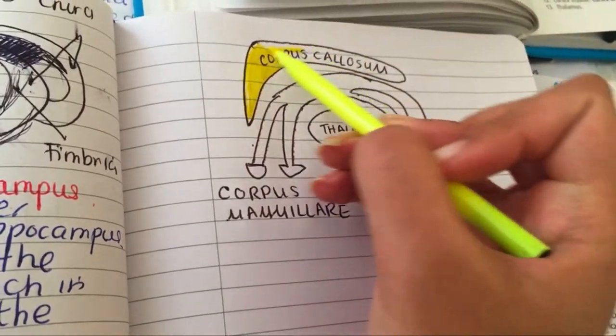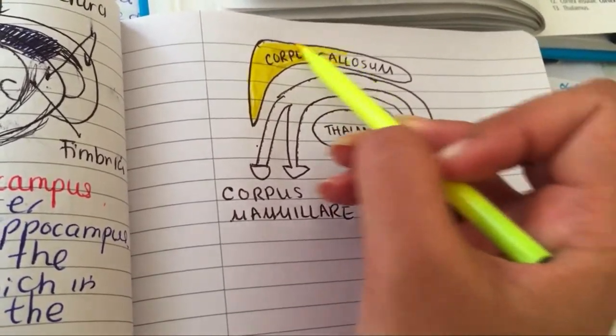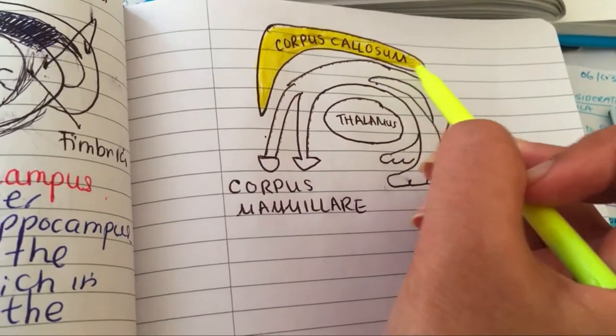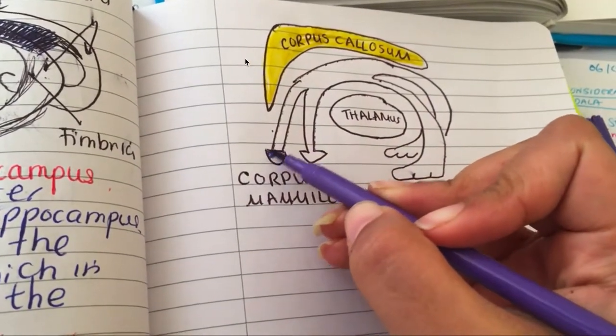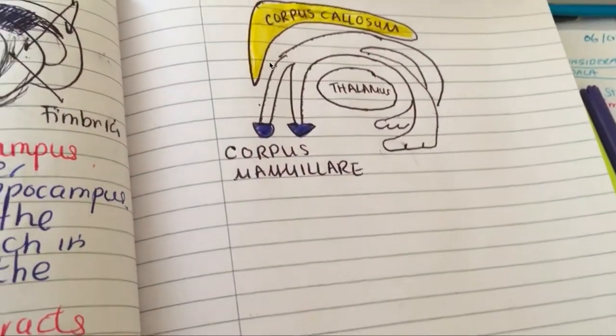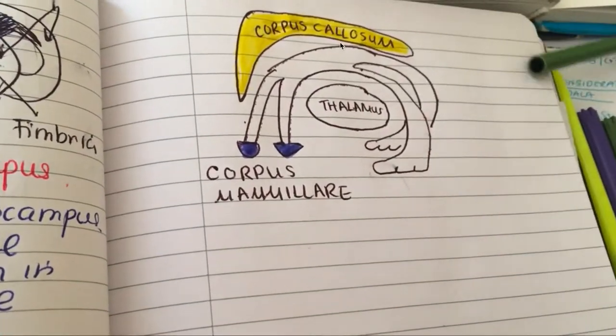Our corpus callosum, remember, is our biggest commissural fiber, commissural fiber meaning connecting, and it connects the two hemispheres of the brain together. So actually our fornix lies below our corpus callosum.